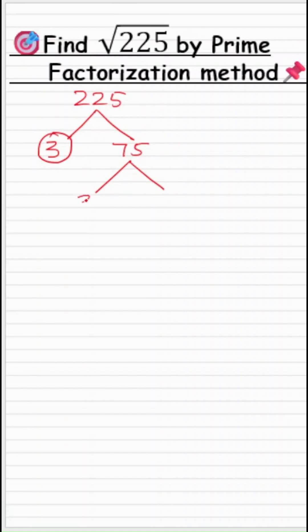75 can again be written as 3 times 25. 3 is a prime factor but 25 is not.